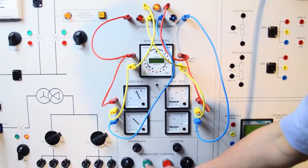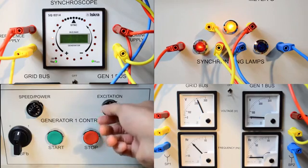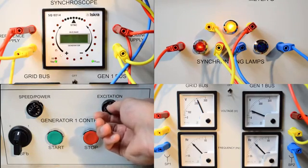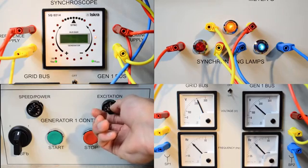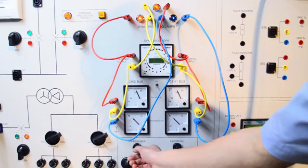The output of the generator or the grid supply run through transformers which give the correct distribution voltage at either the grid bus or the generator bus. This then allows students to correctly synchronize the generator output to the grid supply.